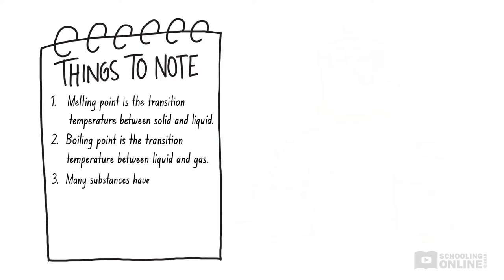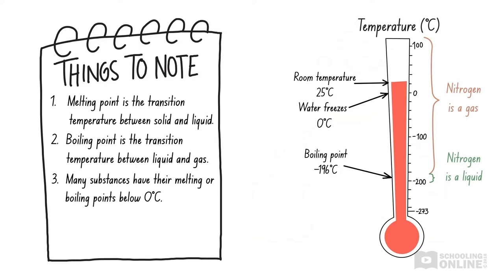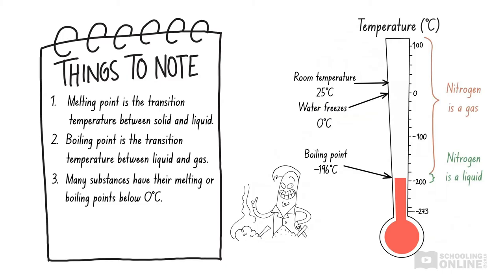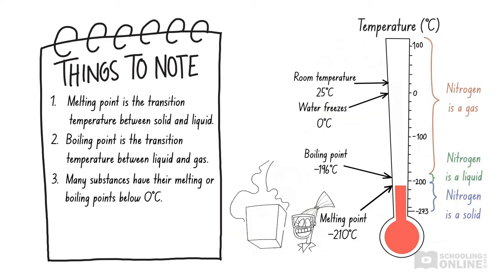It is important to recognise that many substances can have their melting or boiling points below zero degrees Celsius. For example, nitrogen is a gas at room temperature, which is 25 degrees Celsius. If we placed nitrogen gas in an extremely cold freezer, it would eventually condense into a liquid, then freeze into a solid. The boiling point of nitrogen is minus 196 degrees Celsius, so when it reaches this temperature it changes state from a gas into a liquid. If we were to cool it even further, to minus 210 degrees Celsius, the liquid nitrogen would freeze into a solid. It's hard to imagine air turning into a solid, since we never see solid air in everyday life, but it is possible in chemistry.